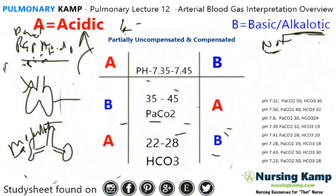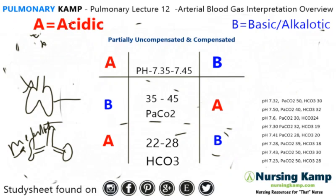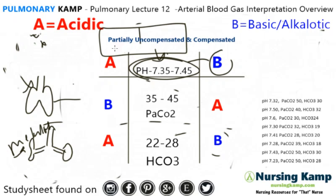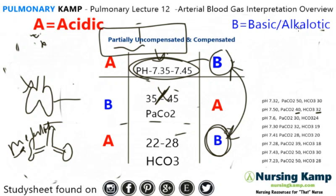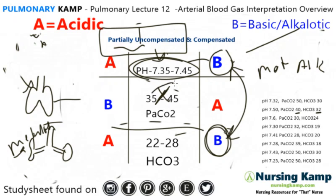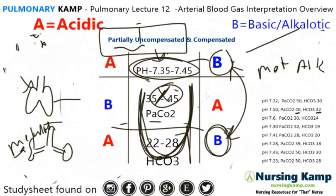Next example: the pH is 7.50 — not in the normal range, so it is either partially compensated or uncompensated. We have a PaCO2 of 40, which is in the middle, and a bicarb of 32. We connect the letters together: we have an alkalotic condition in the metabolic area — metabolic alkalosis. But because we circled in the middle for PaCO2, it is uncompensated.